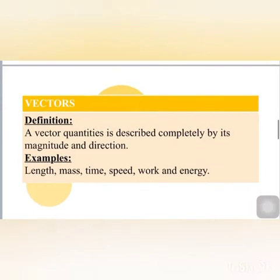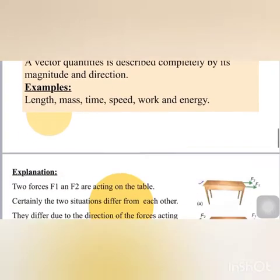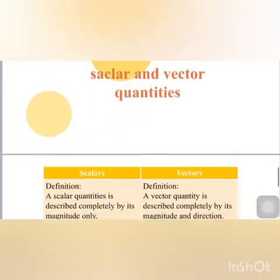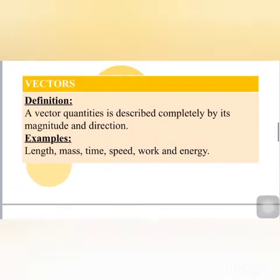Now, vector quantities. A vector quantity is described completely by its magnitude and direction. In scalar quantities we talked about magnitude only, but in vector quantities we talk about direction too. Examples include velocity, displacement, force, momentum, and torque.